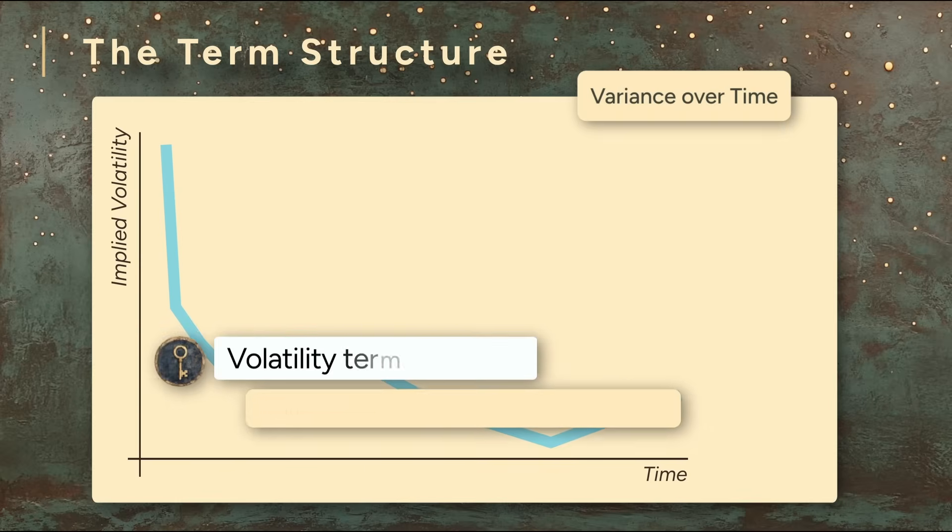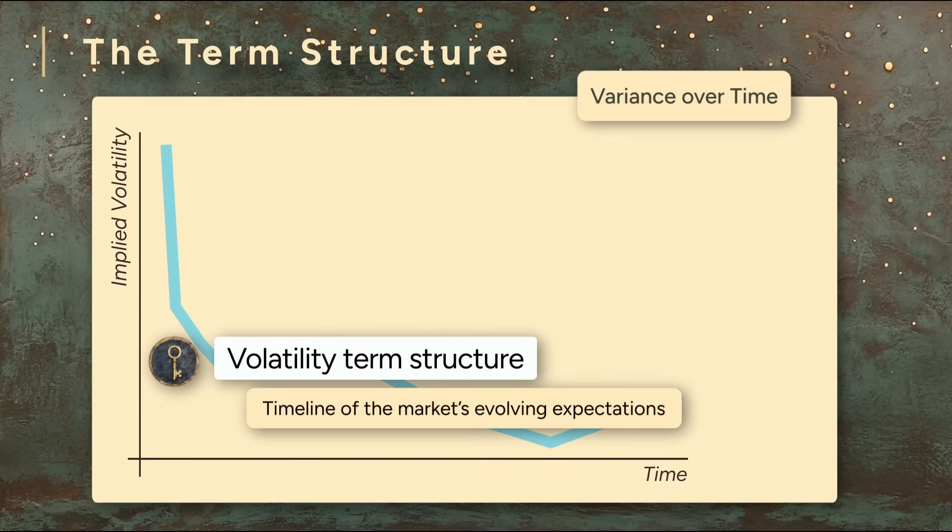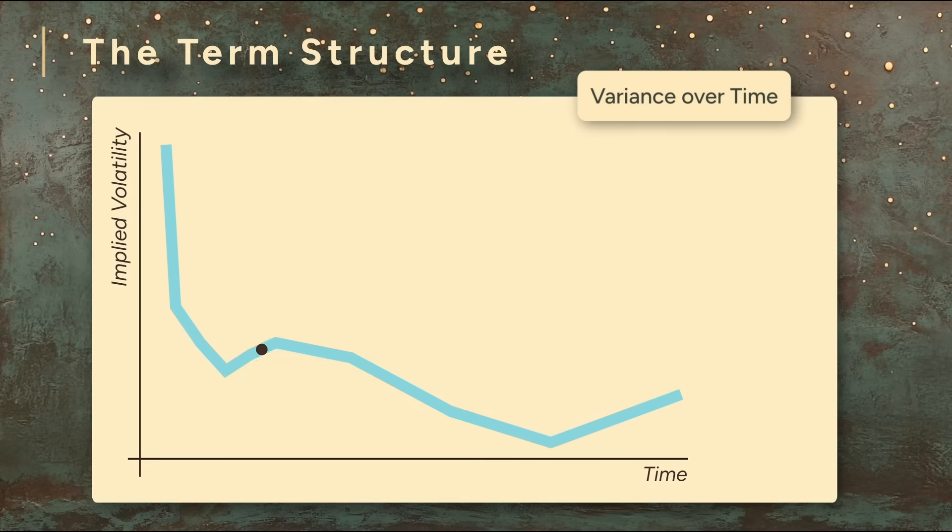In other words, the volatility term structure is a timeline of the market's evolving expectations. We're not just looking at a single point in time. We're seeing how the market's view of risk stretches out into the future.